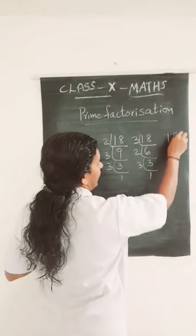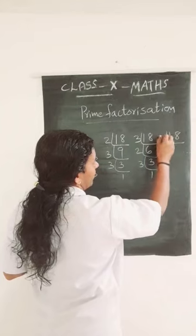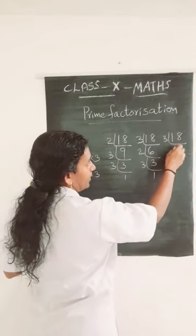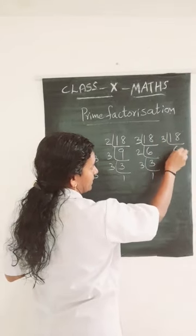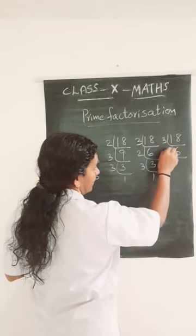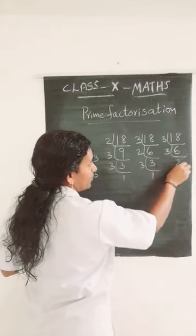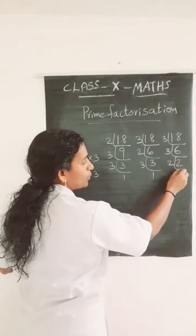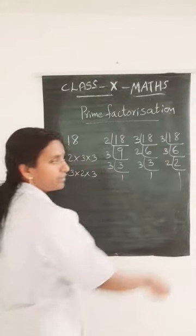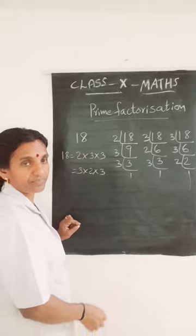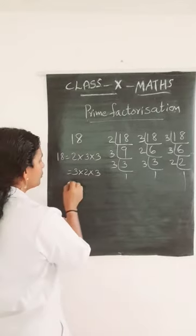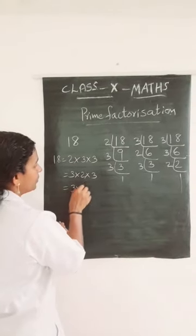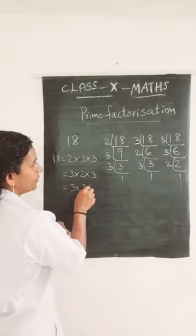Again, you are getting the number 3. Again with 3, you are getting the number 2. Again with 2, you are getting the number 1. So the answer you got is 3 into 3 into 2.